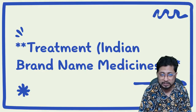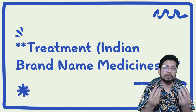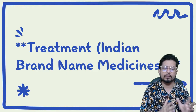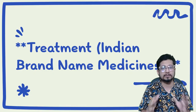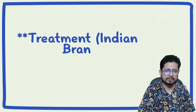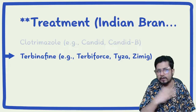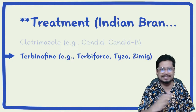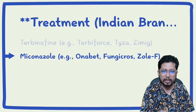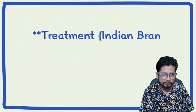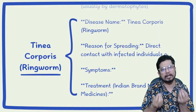In the treatment section, there are local ointments to apply over the ringworm-infected area and medicines to consume. Indian brand names include Clotrimazole — for example Candid, Candid B — these are creams. Terbinafine is another type. Miconazole is also used; Indian examples include Onabet and Fungi Cross. These three sets of antifungal drugs can be administered either as local applications or oral medications prescribed by your doctor.